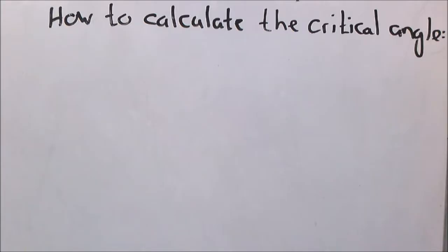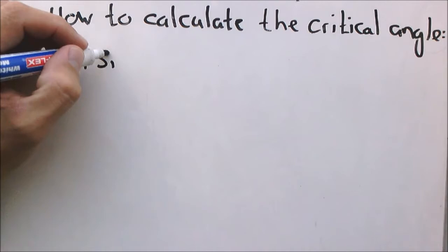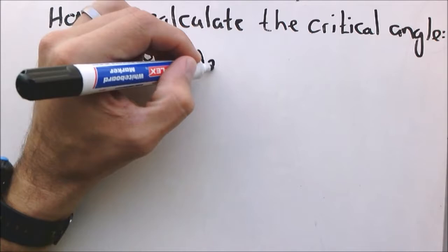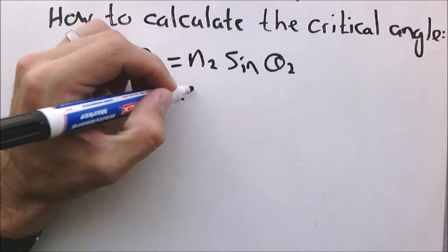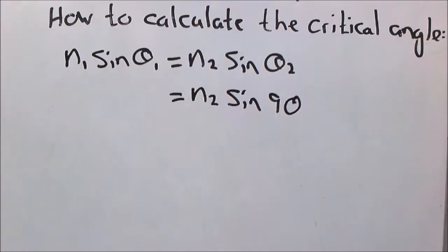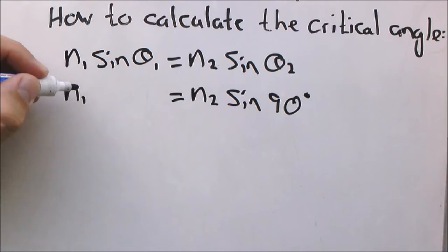Now let's calculate the critical angle. We use Snell's law: N1 sine theta 1 equals N2 sine theta 2. In this case we know the angle of refraction is 90 degrees, so on the right-hand side we have sine 90.